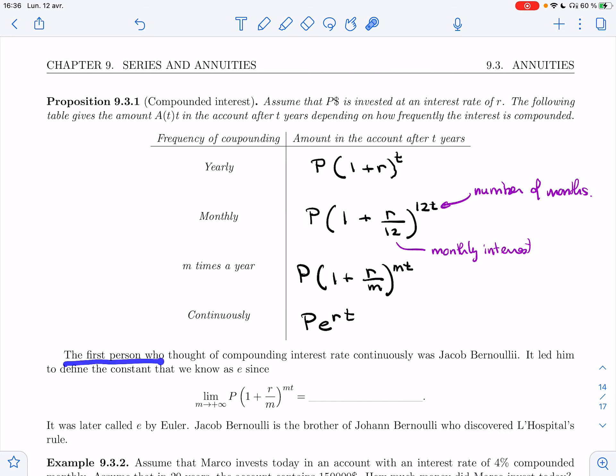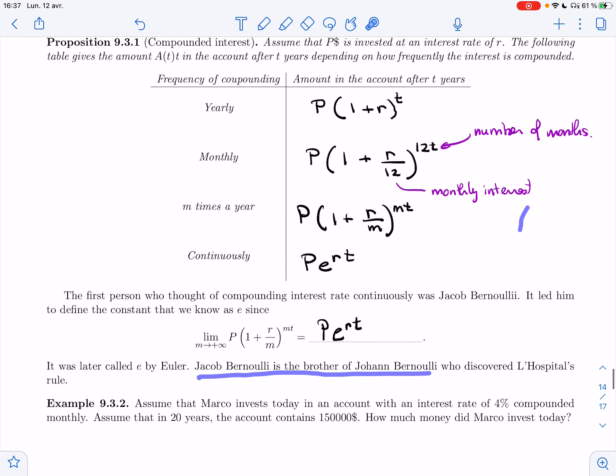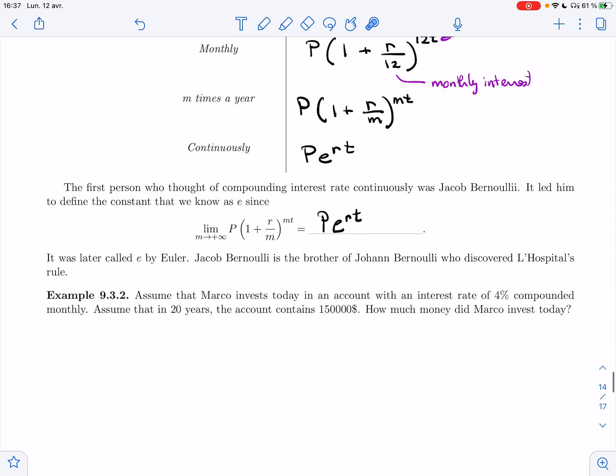Alright, so the first person who thought of compounding interest rate continuously was Jacob Bernoulli. It led him to define the constant that we know as E, since the limit as you, this is the number of times in a year you would compound, you can increase that. Why stop at monthly when you could do weekly? Why stop at weekly when you can do daily and so on? Hourly, minutely, secondly. And so you could keep going like this. And if you take m to infinity, which means that you would compound every little second, you actually end up with this formula, which is why it comes up here. So Bernoulli was a Swiss mathematician. He cared about banking. He came up with this, and he came up with a constant E, but he called it B. So it was later called E by Euler. Jacob Bernoulli is the brother of Johann Bernoulli, who discovered L'Hôpital's rule. So this is two brothers who were really good at math, but weren't very lucky. Let's put it that way. Alright, so let's do one more example like this.